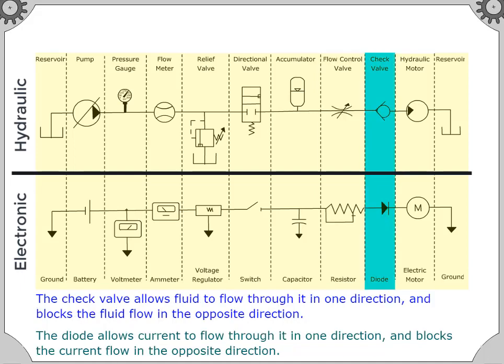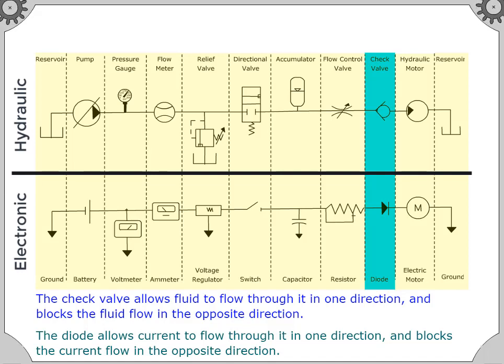The check valve allows fluid to flow through it in one direction and blocks the fluid flow in the opposite direction. The diode allows current to flow through it in one direction and blocks the current flow in the opposite direction.